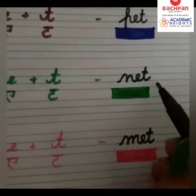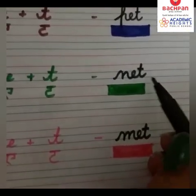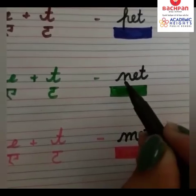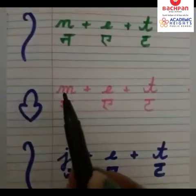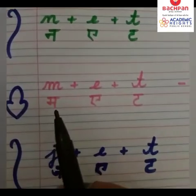N says N, E says E, T says T — N-E-T — Net. N, E, T — Net.